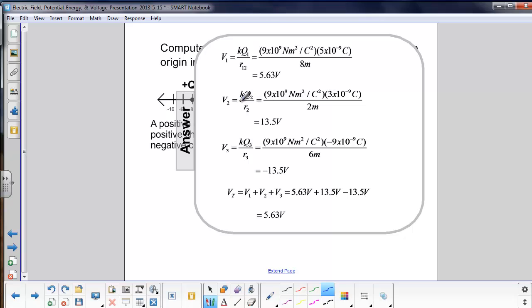The second potential, V2 at the origin, well that's two meters away, and that again has a positive charge. So in both these cases, we get a positive voltage.